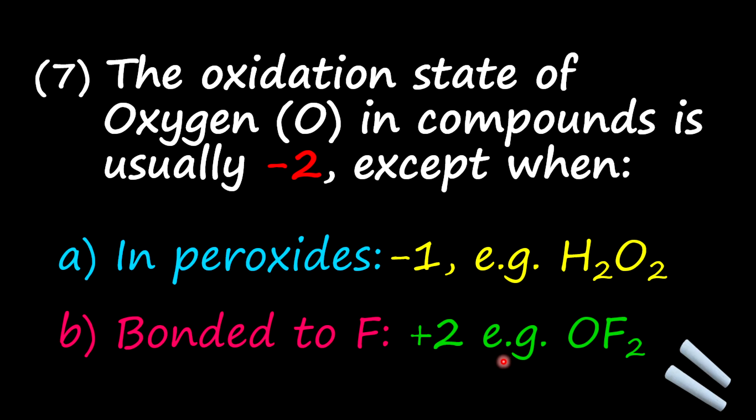Now, within this example, I want to point out something here, right? So oxygen is going to be positive two here when it is bonded to fluorine because remember, fluorine is the most electronegative element. And therefore, in any case, chlorine has to be negative. So in this case, oxygen becomes positive.